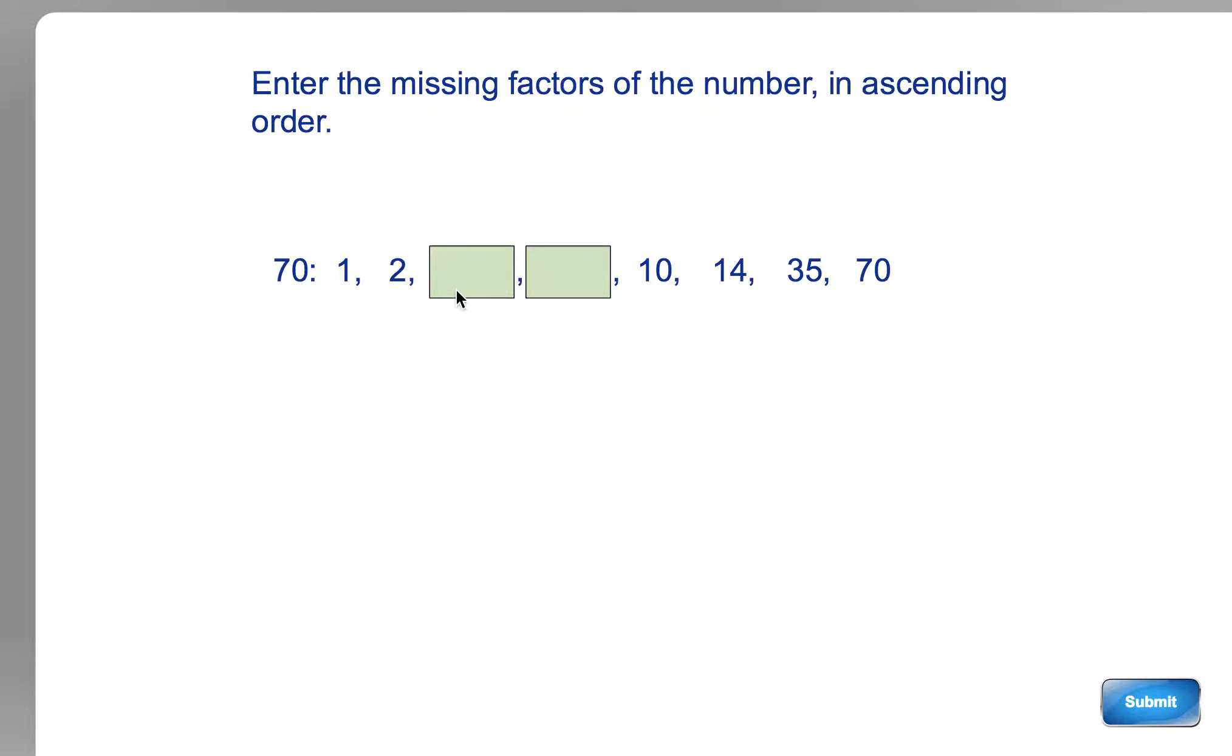You need to think of the other two factors that go to make 70. This one is probably the easiest one. You know these work in pairs, so you know that this one goes with 10, and this one goes with 14.